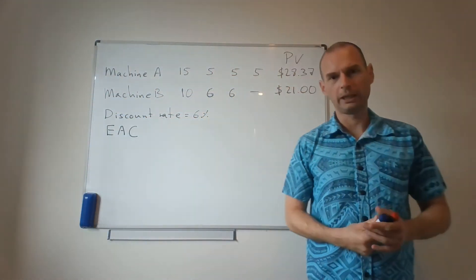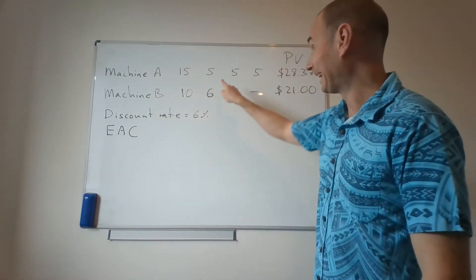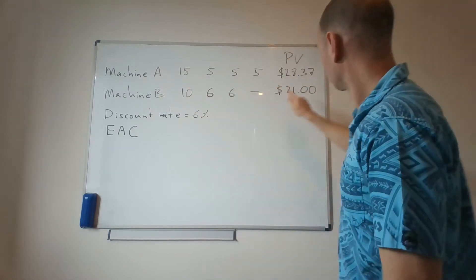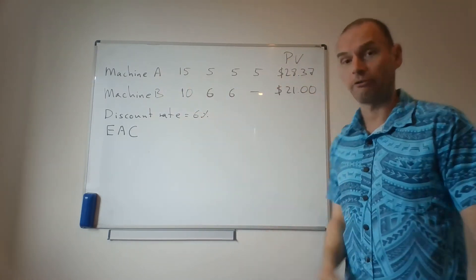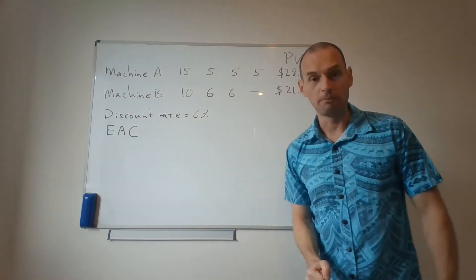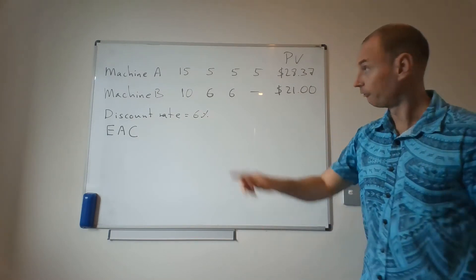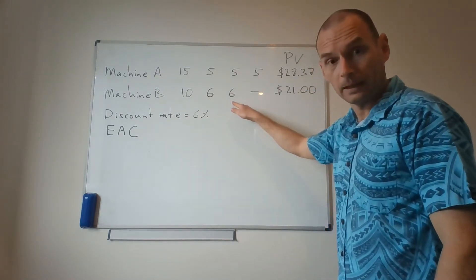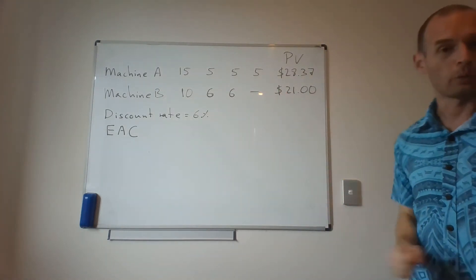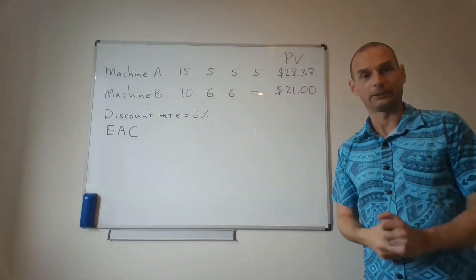What if instead of buying each of these machines, I were to rent Machine A for three years? And let's say that the present value of my rental payments would be $28,370. Again, with Machine B, what if instead of purchasing it, I were to rent it for two years? And the present value of all my rental payments would come up to $21,000. That is what equivalent annual cost is.